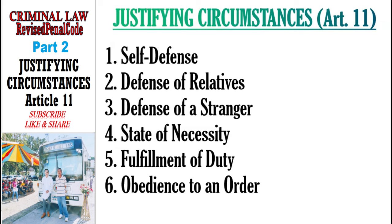We mentioned that there is an incomplete self-defense when all of the elements or requirements for self-defense are not present, and it can either be an ordinary mitigating circumstance under Article 13, Paragraph 1, or a privilege mitigating circumstance under Article 69. Either way, the accused or the offender is still criminally liable.